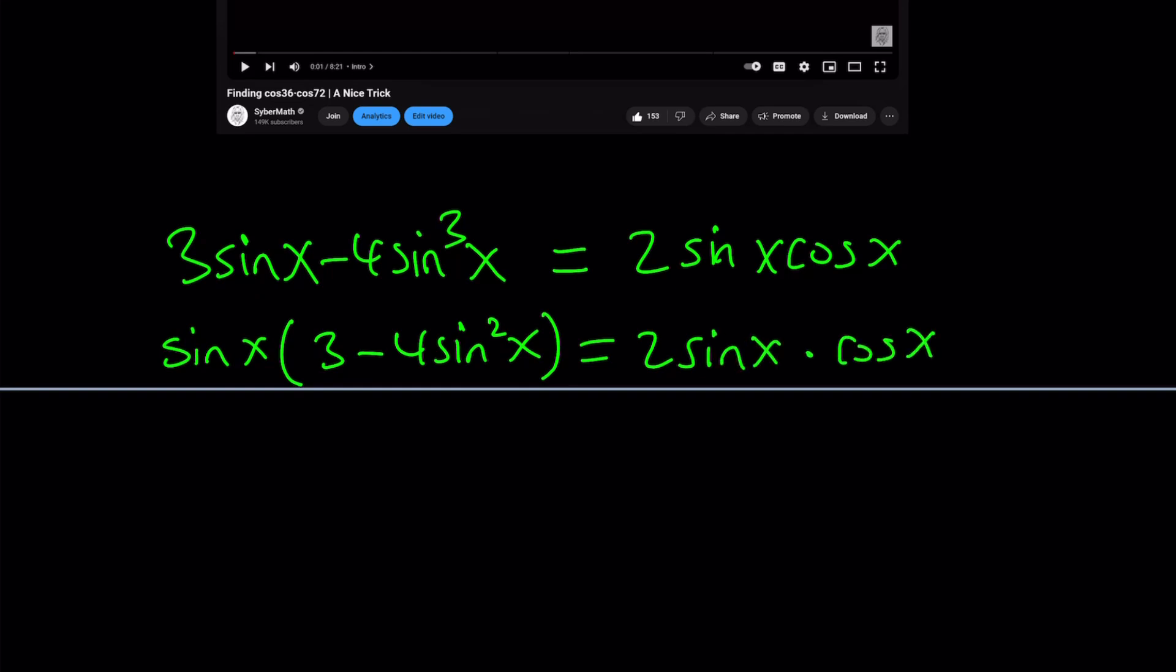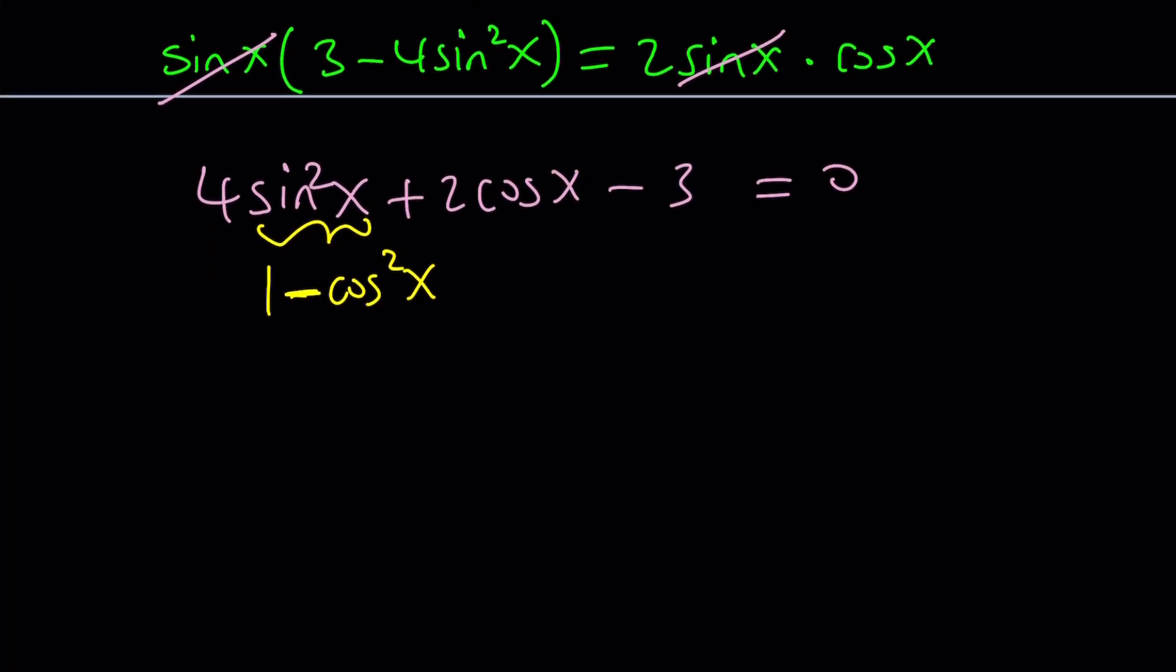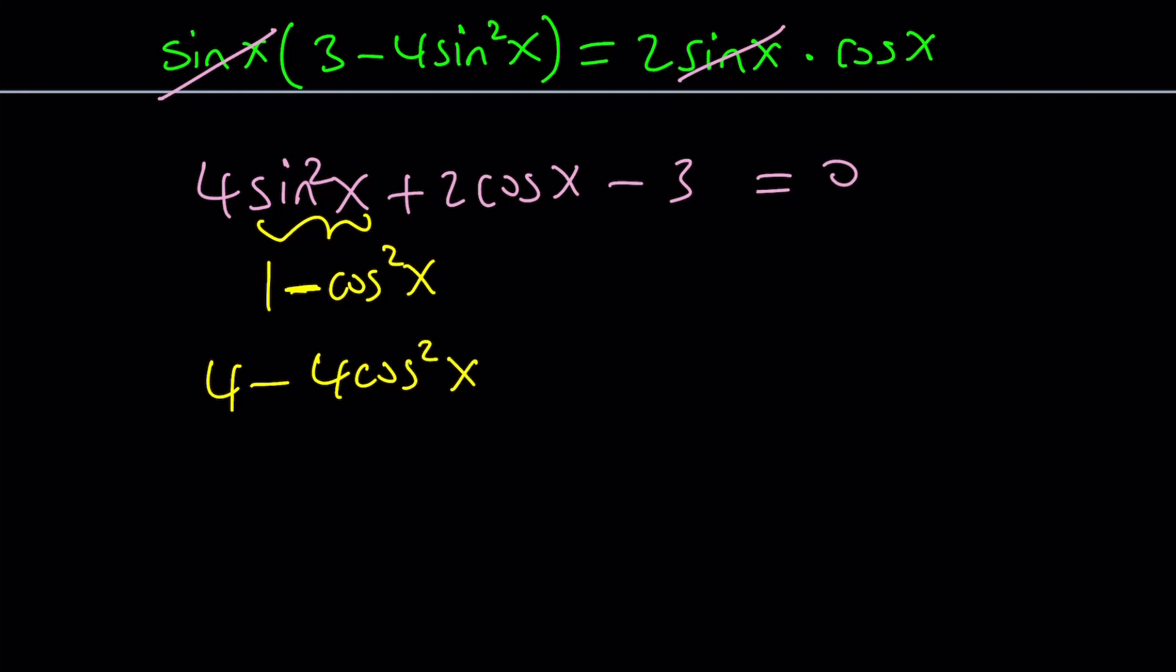We have to consider one thing here. What happens if sin x is equal to 0? In that case, this equation is satisfied. But remember, x is 36, and sine of 36 degrees is not 0. So we can divide both sides by that with confidence. This gives us a quadratic equation. We get 4 sin squared x plus 2 cosine x minus 3 equals 0.